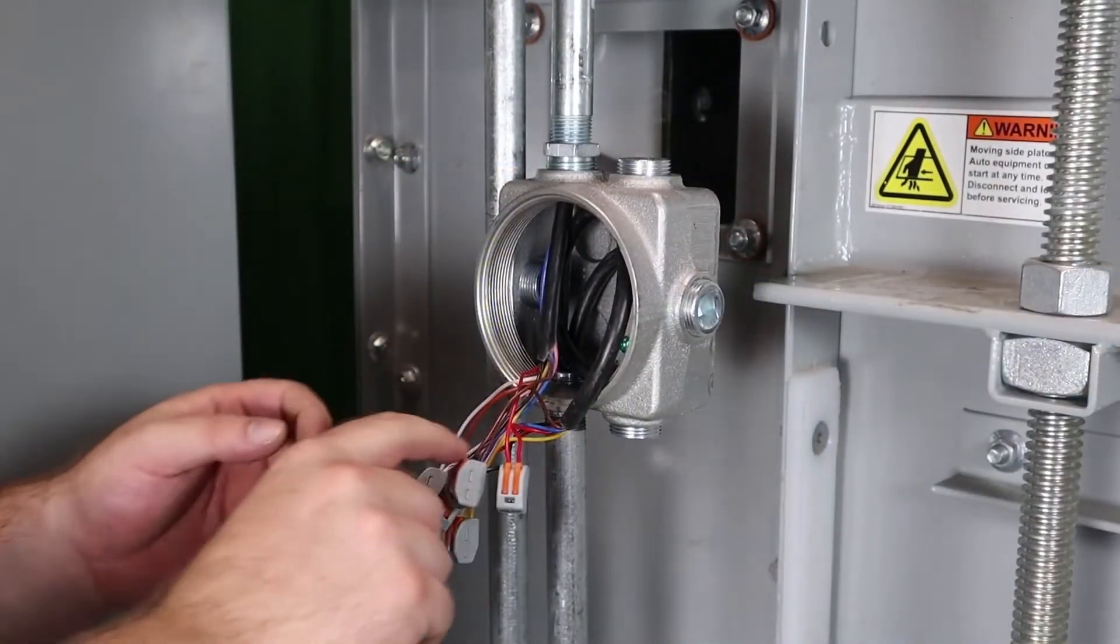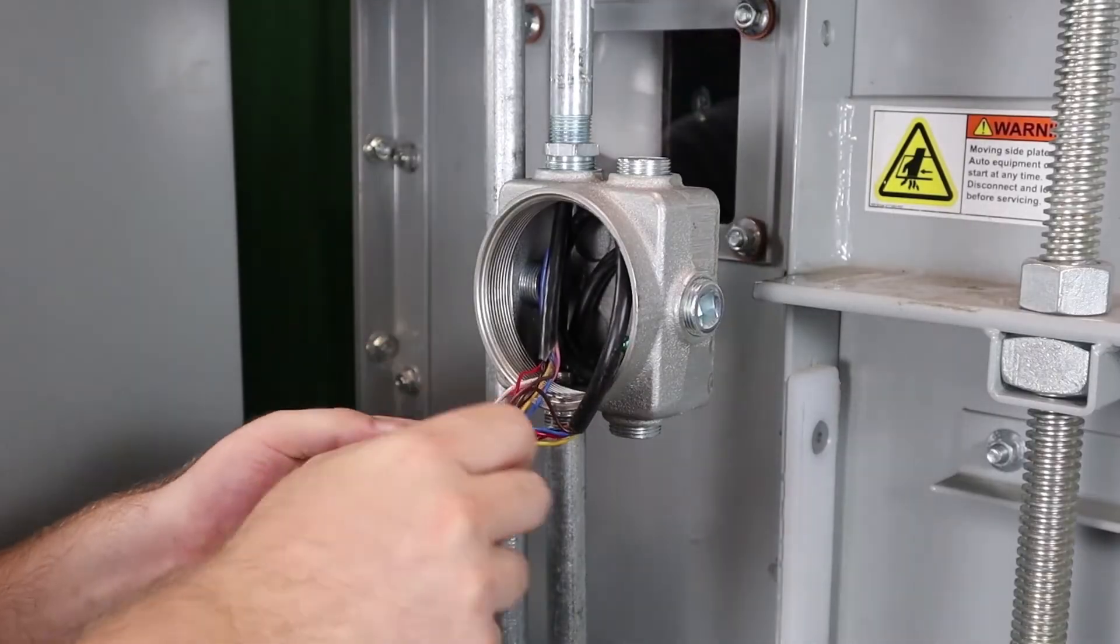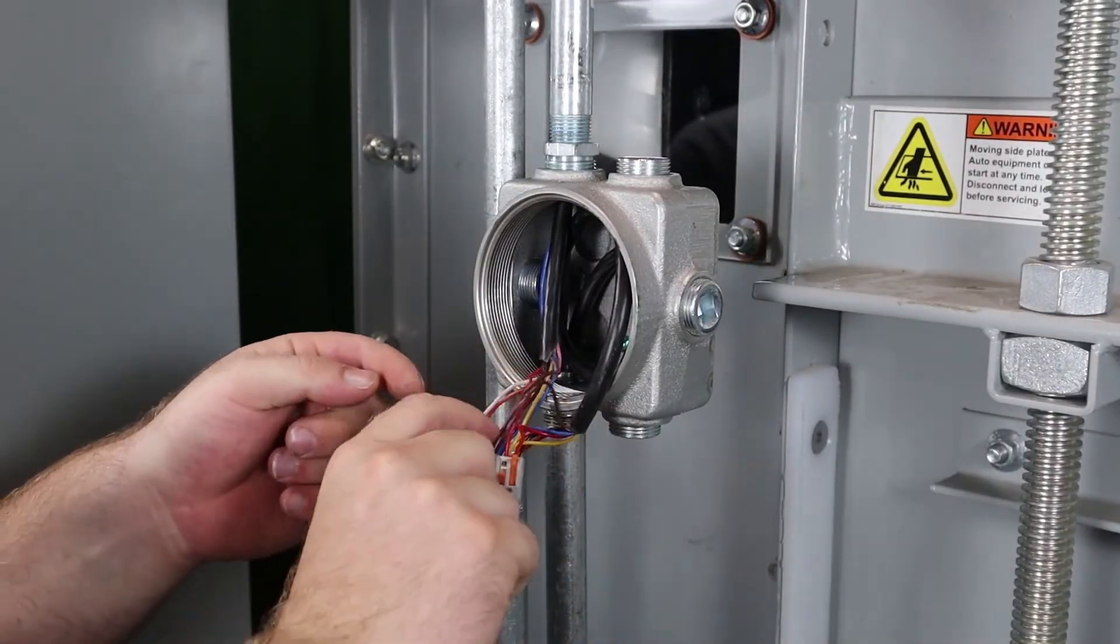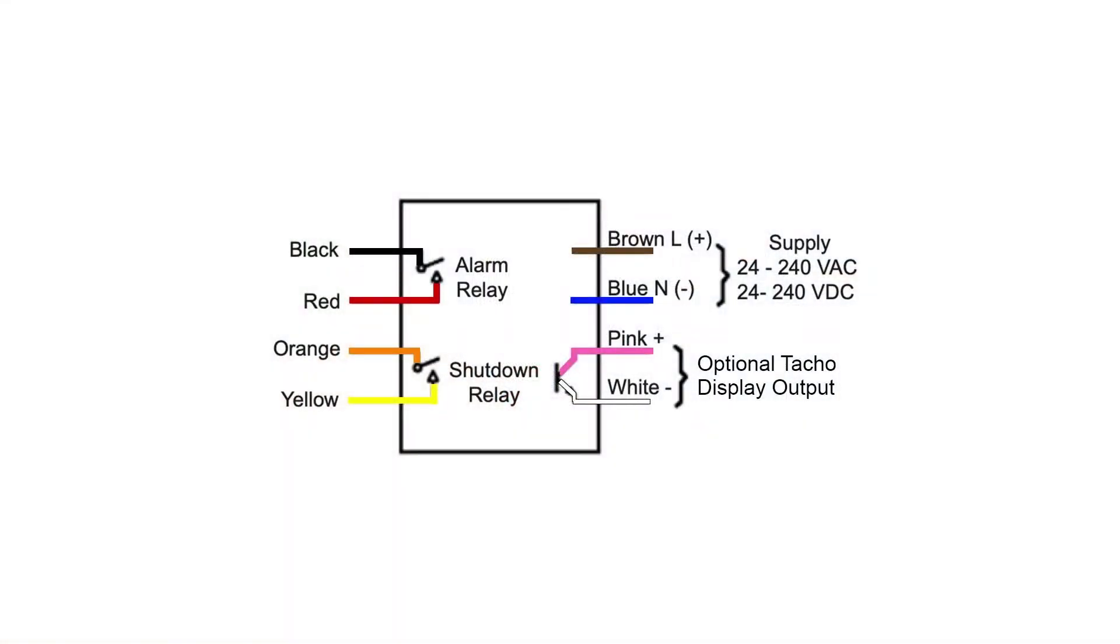Now to wire the unit up. First, connect the wires directly into the control circuit or into the plant PLC. There are eight wires on the M800. Two for power, two for alarm, two for shutdown, and two for the display.